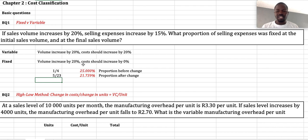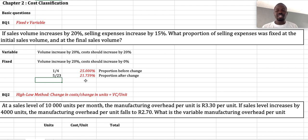The proportion of fixed cost before the increase is 25%. The proportion of fixed cost after the increase is 21.739%. If you are new to my channel, please do subscribe and click the notification bell as I will be continuing to do these videos on a timely basis. Thank you for watching.